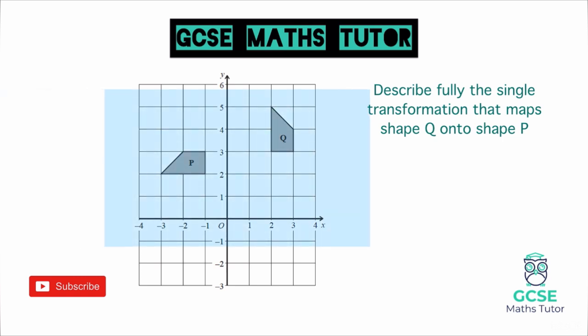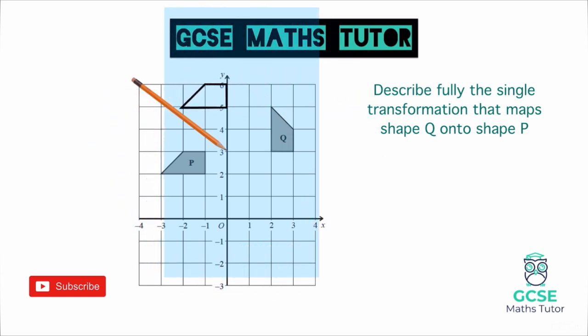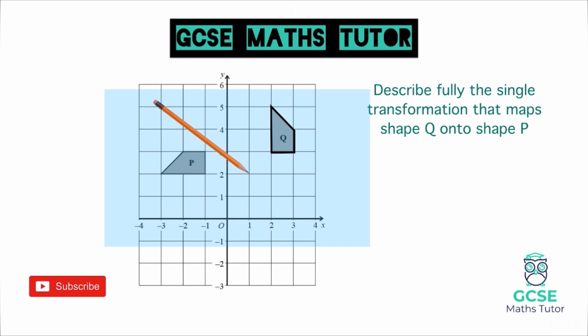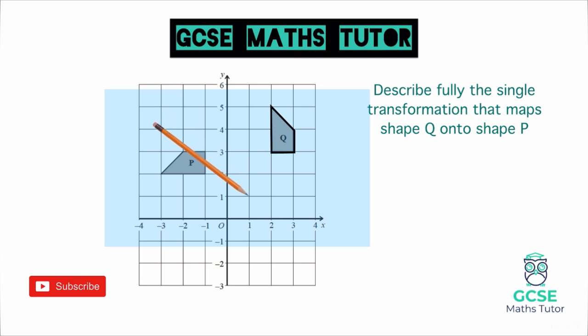Place the tracing paper over the top and trace over shape Q. Now we're going to use trial and error to find the rotation point. Take your pencil and guess a coordinate — let's try 0, 3. Press the pencil down and rotate the tracing paper 90 degrees anticlockwise — it goes nowhere near. Try again at coordinate 1, 2 — getting closer but not quite there. Move it down to coordinate 1, 1 and do the rotation — that actually lands on top of the shape. So we've found the rotation point.